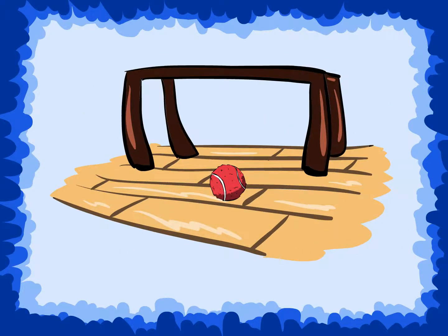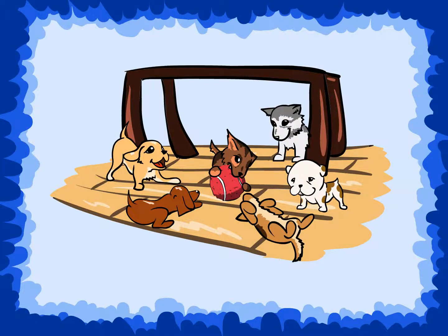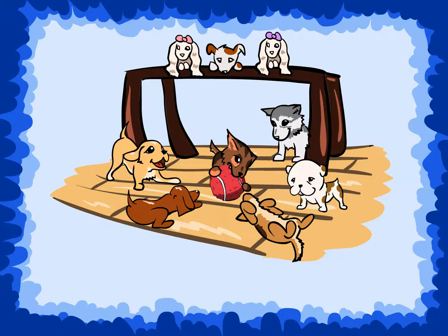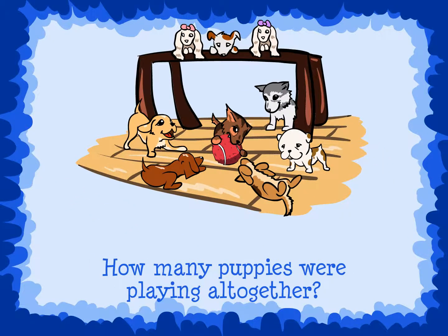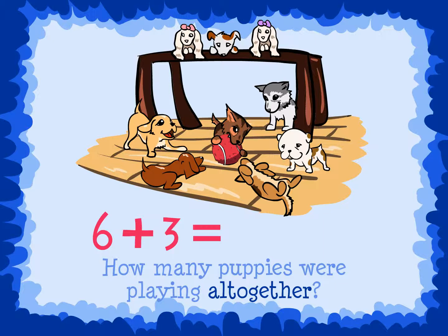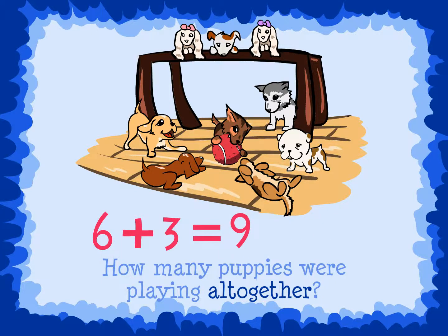Let's try another one. There were six puppies playing with a ball. Three more puppies came to play with them. How many puppies were playing all together? Step 1: We need to find out how many puppies were playing all together. We need to add. Step 2: There were six puppies and three more came to play. 6 plus 3. We can use the count up strategy — 6, count up 3 more: 7, 8, 9 — to find the answer. 6 plus 3 equals 9.